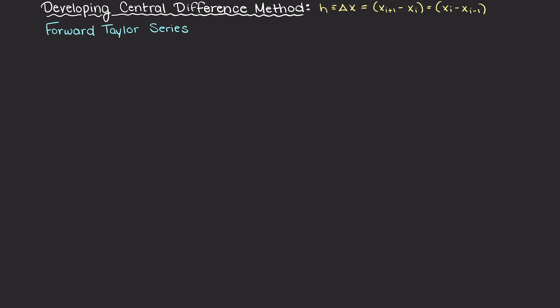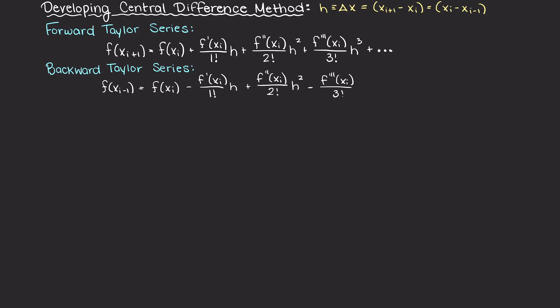Let's begin by writing out our forward and backwards Taylor series approximations. One thing to note here in the backwards group is that we have negative terms in the odd powered terms, which we learned about in the backwards difference method theory video.